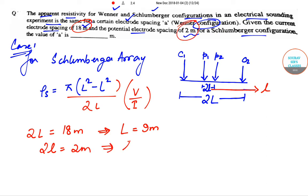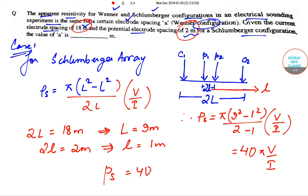It becomes π(9² - 1²)/(2×1) times V/I. You will get this to be 40π V/I. So what we get finally is ρ_s = 40π(V/I). This is for the Schlumberger array.